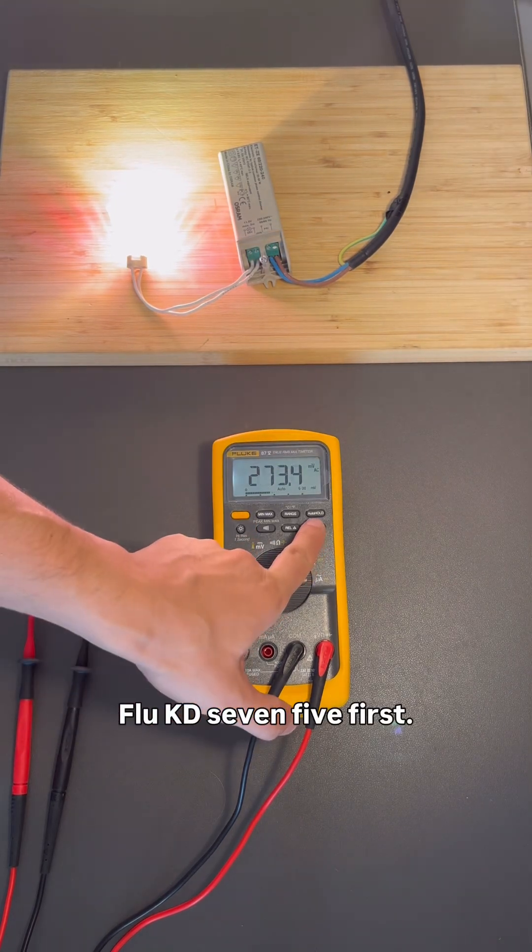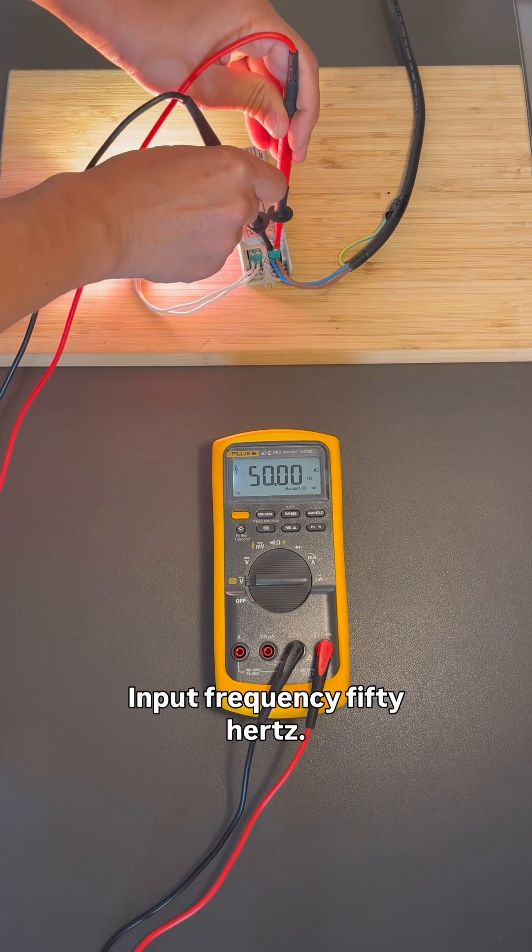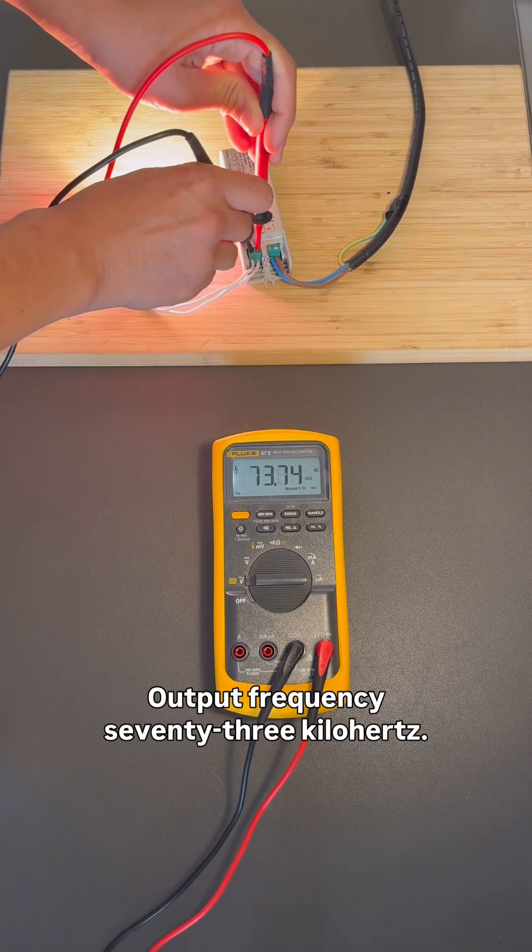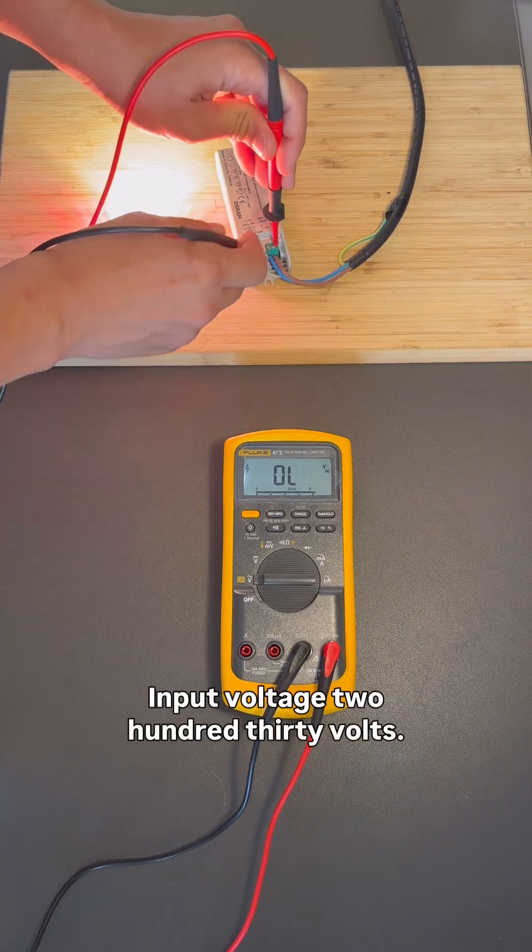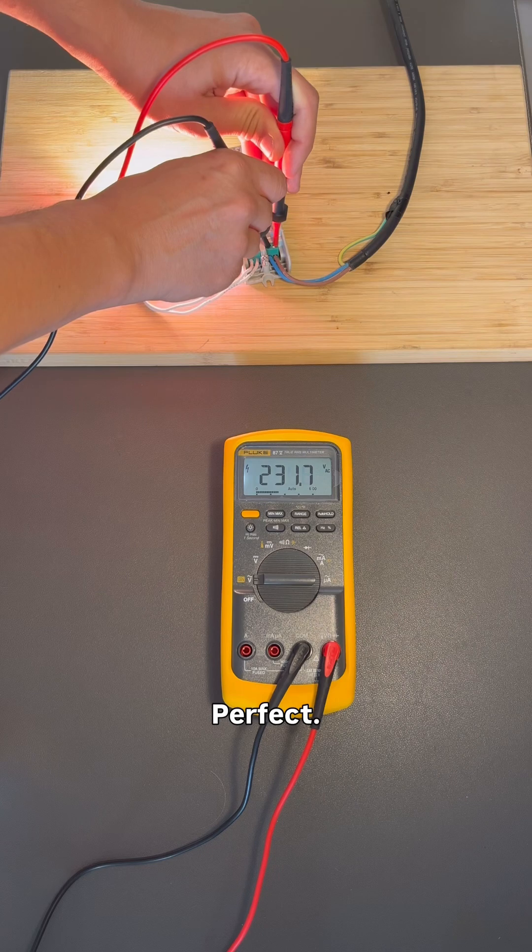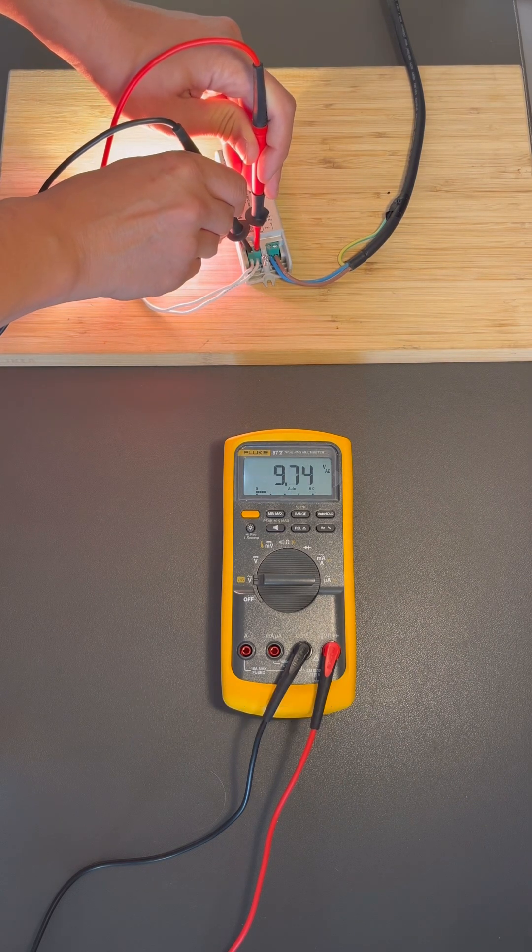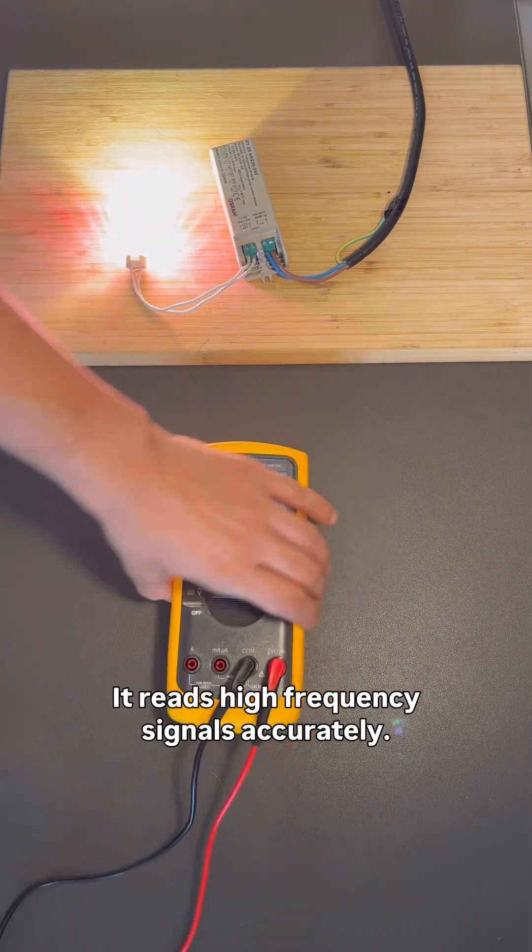Fluke 87-5 first. Input frequency, 50Hz. No problem. Output frequency, 73kHz. Input voltage, 230V. Perfect. Output voltage, 9.75V. Thanks to its 20kHz bandwidth, it reads high-frequency signals accurately.